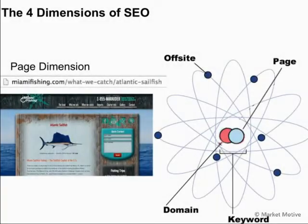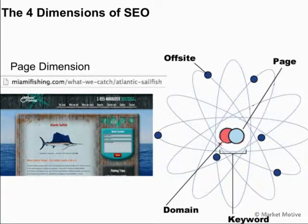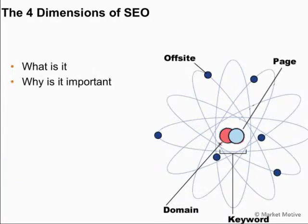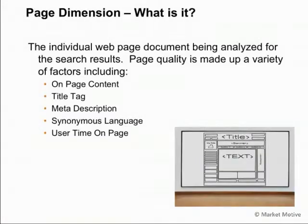The page dimension, combined with the domain dimension, includes page quality and domain authority. If we want to rank a page for 'Atlantic Sailfish' or 'Catch Miami Sailfish', we start at the page dimension and optimizing that page. The page dimension is any individual web page document being analyzed for the search results. This could be the content of that page — the title tag, meta description, synonymous language, body copy — anything that's on that individual page.